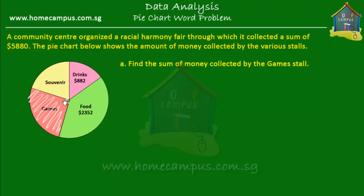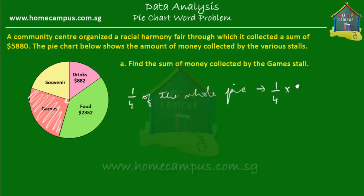That right angle mark on the slice tells us that its value is equal to a quarter of the whole pie. So the game stall collected a quarter of the amount collected by all the stalls together — a quarter of the whole pie — which means it's equal to one fourth of $5,880, because the whole pie stands for $5,880 and the game stall collected a quarter of that. So it's equal to one fourth of $5,880.